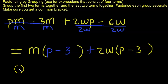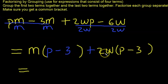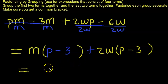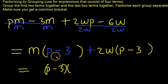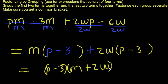As a check, expanding: M times P is MP, M times minus 3 is minus 3M, 2W times P is 2WP, and 2W times minus 3 is minus 6W — matching the original expression. The common factor is (P minus 3). Factoring out (P minus 3), we are left with M plus 2W. So the final answer is (P minus 3)(M + 2W), and we're done. In the next video we'll look at factorizing quadratic expressions. Goodbye!